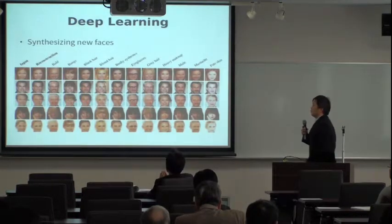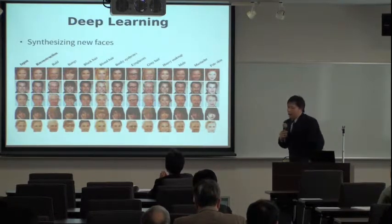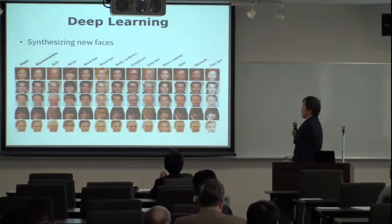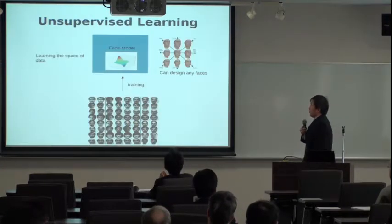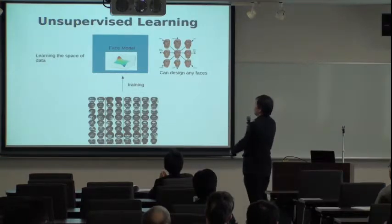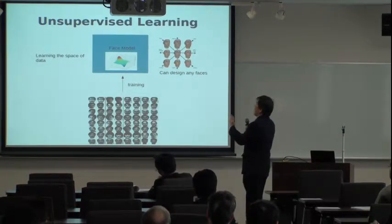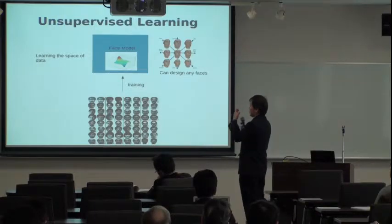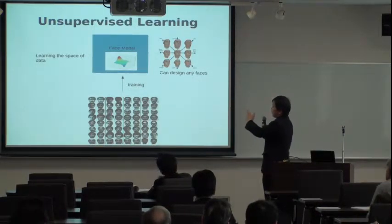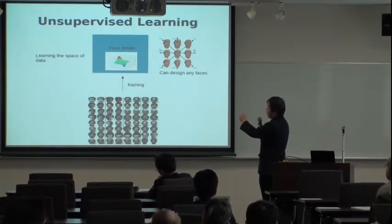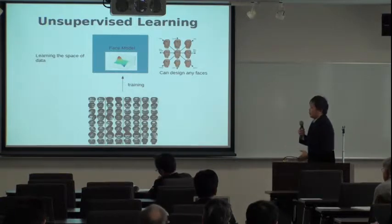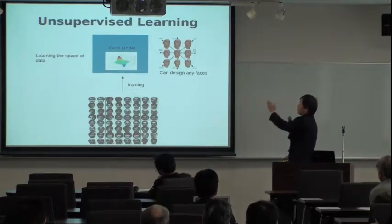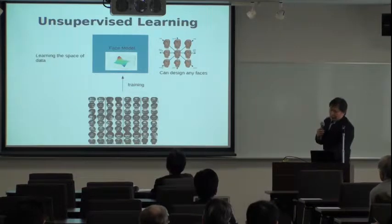Another popular topic is face generation. With millions of face images on the web, you dump them into a neural network and the system automatically learns all the axes important for generating faces — things like hair color, the height of the nose, or the distance between the eyes. These parameters are automatically learned without needing to specify them. This is an unsupervised learning scheme — you just provide all the images and it automatically learns the features of a face.